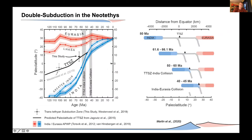Here are our results presented against the plate reconstructions from van Hinsbergen et al. 2019. The black line is the predicted paleolatitude of the intra-oceanic subduction system using the double subduction model of Jagoutz et al. 2015. Our results are in good agreement with that prediction, and a multi-stage collision model is in good agreement with the available plate reconstructions.